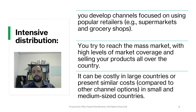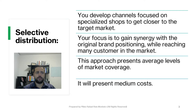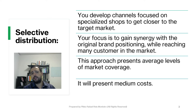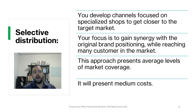The second option is selective distribution. In that case, you're going to narrow your focus, trying to develop channels more focused on specialized shops to get closer to your target market. So probably you're going to enter just some shops related to your product — to cooking, to food, or special food — but you're going to enter in many different points of sale. Your focus here is to gain synergy with the original brand positioning while at the same time reaching more customers in the market.